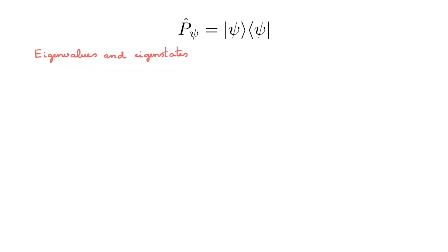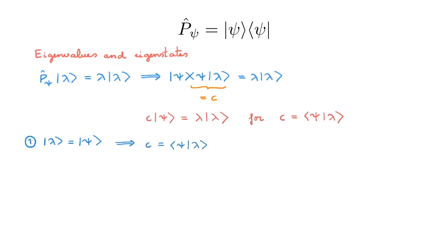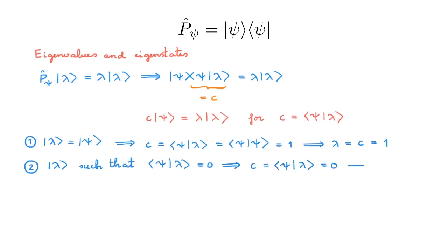Now I want to look at the eigenvalues and eigenstates of the projection operator. Let's start by writing the eigenvalue equation: P_psi acting on eigenstate |lambda⟩ gives the eigenvalue lambda multiplying eigenstate |lambda⟩. We can replace the projection operator by its definition as an outer product on the left-hand side. We obtain a bracket that gives a scalar C, and we can rearrange this eigenvalue equation as C|Psi⟩ = lambda|lambda⟩, where C is the bracket between |Psi⟩ and |lambda⟩. There are two possible solutions. The first is that the eigenstate |lambda⟩ is equal to |Psi⟩. In this case, C becomes the bracket between |Psi⟩ and itself, which gives 1 because |Psi⟩ is normalized, implying lambda is also 1. The second possibility is that |lambda⟩ is orthogonal to |Psi⟩, which implies C is 0, and lambda is then also 0.